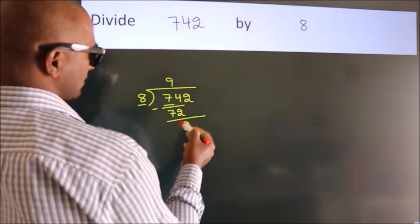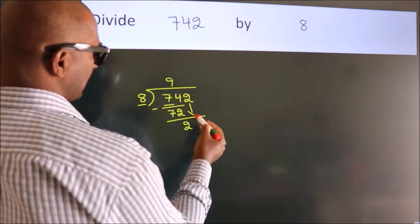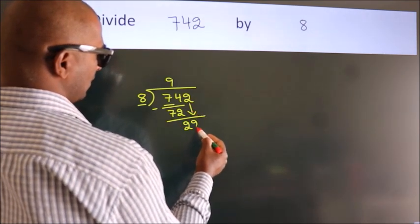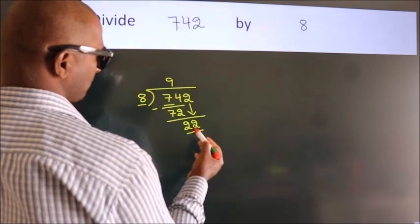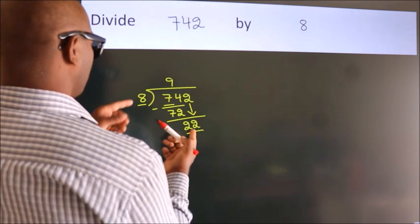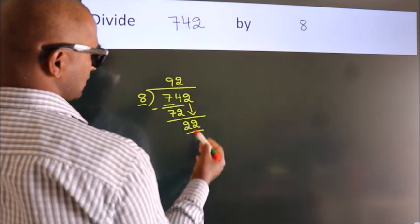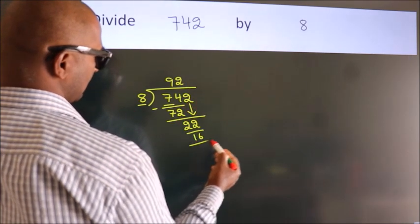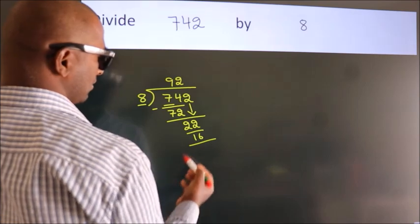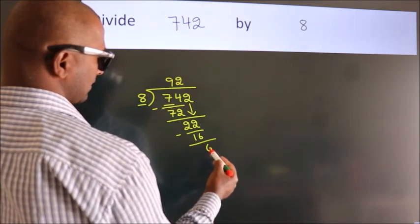After this, bring down the next number. Bring down 2, so 22. A number close to 22 in the 8 times table is 8 twos, 16. Now we subtract, we get 6.